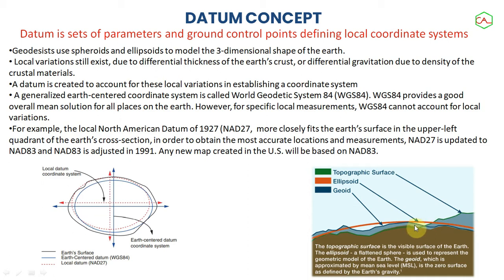The ellipsoidal surface — a flattened shape — is actually used to represent the geometric model of the Earth. The geoid itself is approximately a kind of mean sea level; it is the zero surface as defined by the Earth's gravity. These are different surfaces at different locations. It depends on where a particular reference number is coming from. You need to understand the datum you're working from so this will help you understand how to project to that datum. Looking at this diagram, you can see some irregularities on the Earth's surface, with Earth-centered datums including WGS84 and local datums such as NAD.